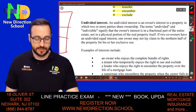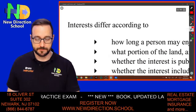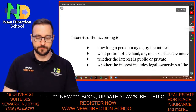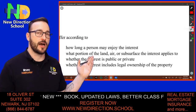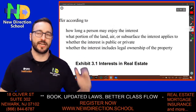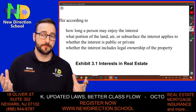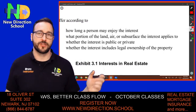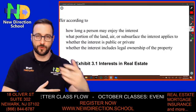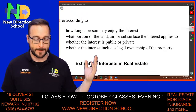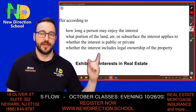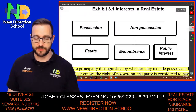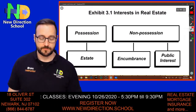Those are examples of interest. The difference between types of interests includes: the time frame of how long you may enjoy the interest; what portion of the land — air or subsurface — the interest applies to; whether it's a public or private interest; and whether it includes legal ownership of the property or not. These are the different types of interests in real estate.